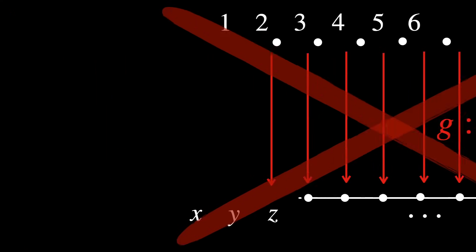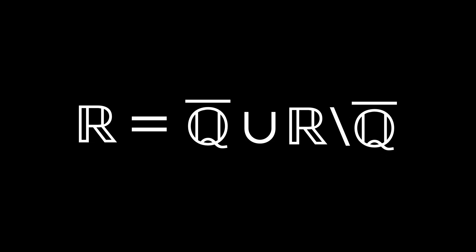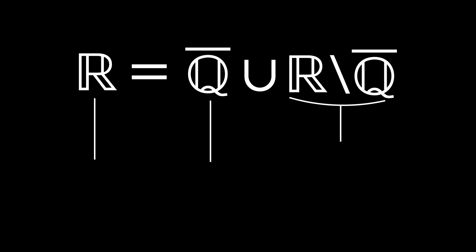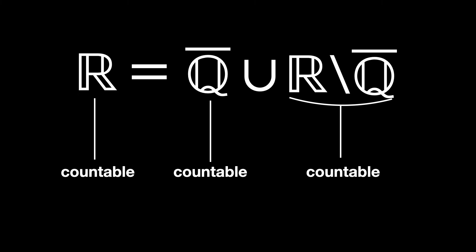As we've seen before, the transcendental numbers are just real or complex numbers that are not algebraic. Another way of expressing it is by saying that the real numbers are the union between the set of algebraic numbers and the set of transcendental numbers. Therefore, if the algebraic numbers are countable, and if we also consider the transcendental numbers to be countable, then the real numbers — which are just their union — must be countable as well. This is a contradiction, and thus we conclude that our hypothesis was wrong. Indeed, the transcendental numbers are uncountable.